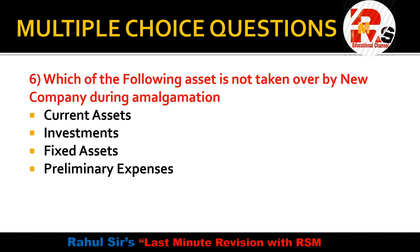Question 5 — which of the following assets is NOT taken over by the new company during amalgamation? The options are current assets, investments, fixed assets, and preliminary expenses. The answer is preliminary expenses — it is one kind of fictitious asset, also called miscellaneous expenses, which is not taken over by the new company during amalgamation.